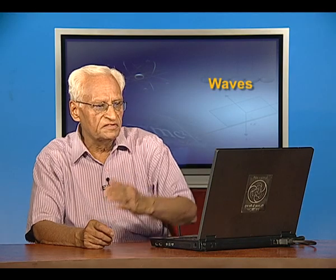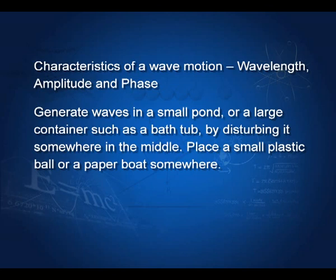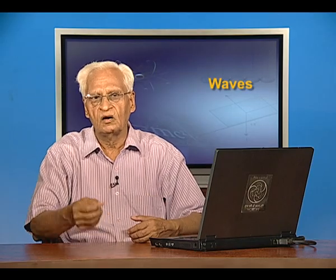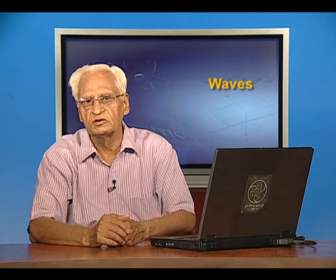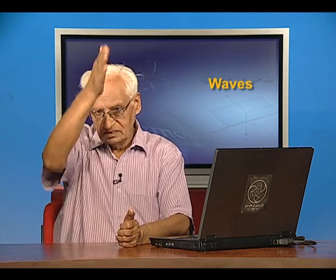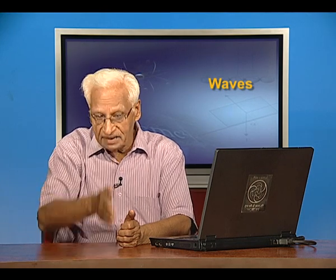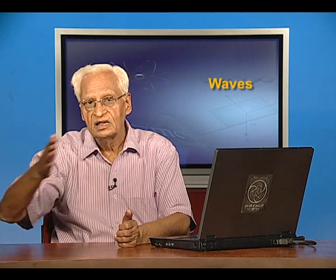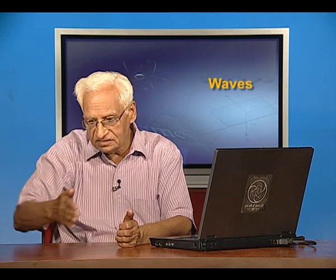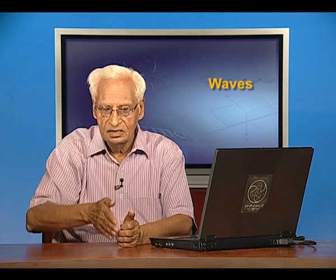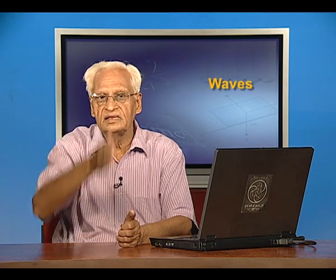What are the characteristics of wave motion? Wavelength, amplitude, and phase. Generate waves in a small pond or a large container such as a bathtub by disturbing it somewhere in the middle. Place a small plastic ball or paper boat and see how it travels up and down at the same place. It does not travel — the ball does not travel. The waves travel. The ball keeps on oscillating at the same place.